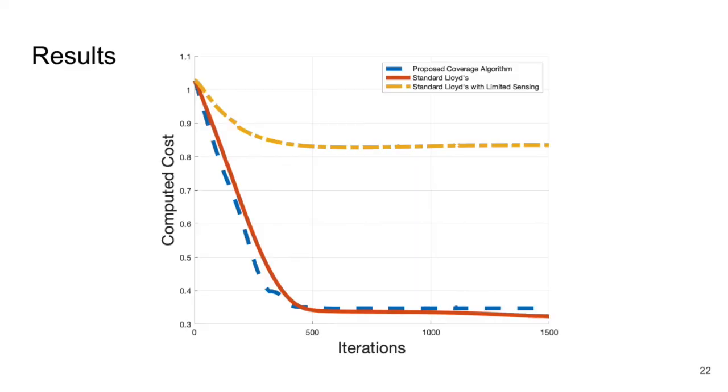Here, we show the computed cost of traditional Lloyd's algorithm, in red, range-limited Lloyd's algorithm, in yellow, and our proposed algorithm, in blue. We can see that the computed costs between the proposed algorithm and traditional Lloyd's algorithm is similar, and both outperform the range-limited algorithm. It is important to note that just because traditional Lloyd's algorithm and our proposed algorithm have similar converged costs does not mean that the final configuration of the robot in both algorithms will be the same.